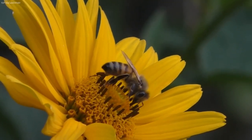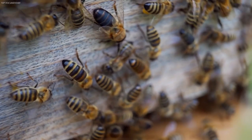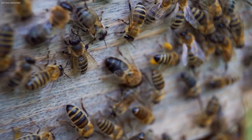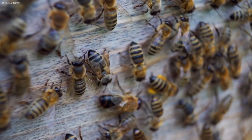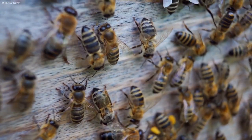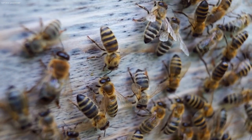Like most insects, bees have three pairs of legs and four wings. They also have a special stomach called a honey stomach, in which they carry nectar. All female bees have a sting, which they use for self-defense. Bees can be grouped into two general categories. Most are solitary bees — that is, they live alone. Honeybees and bumblebees are examples of social bees that live and work together in large groups or colonies.